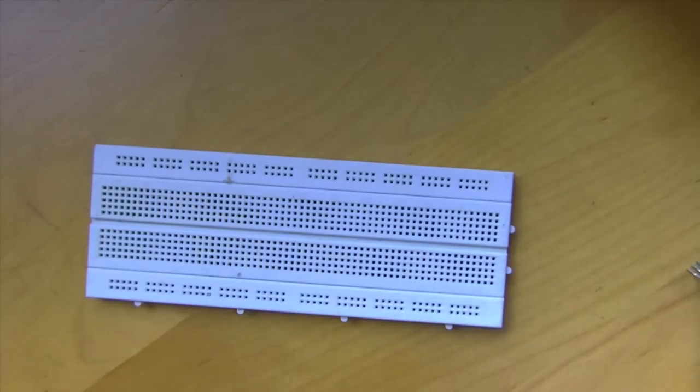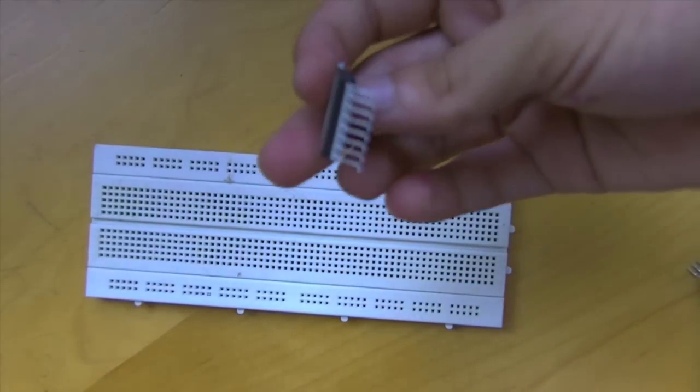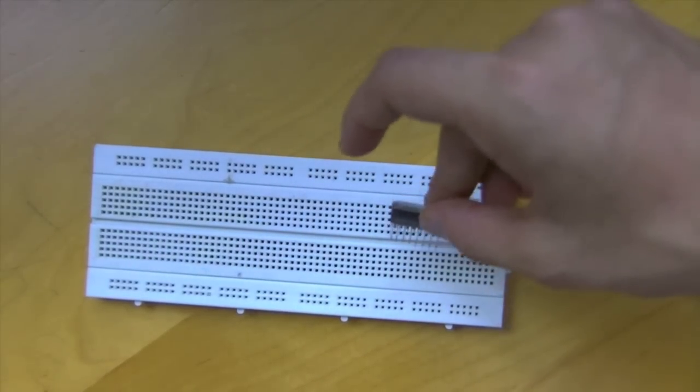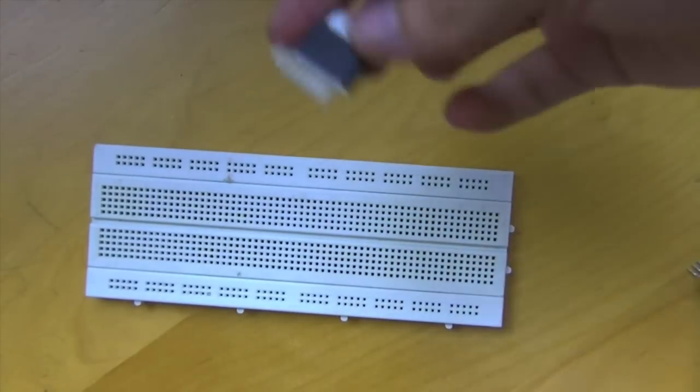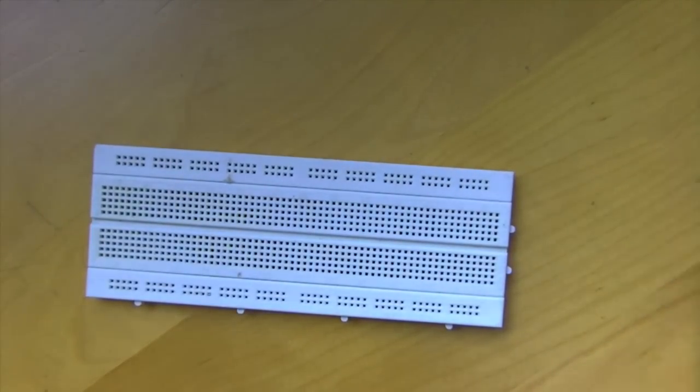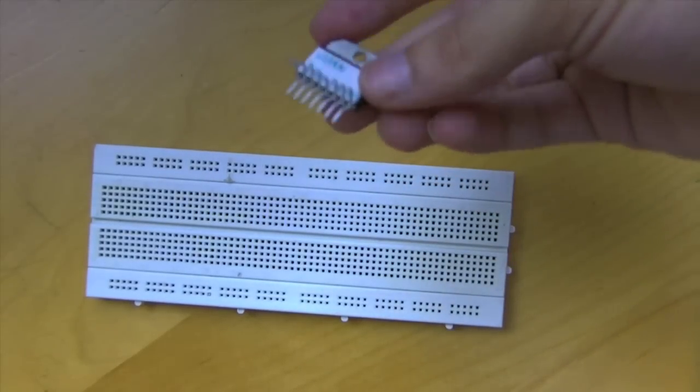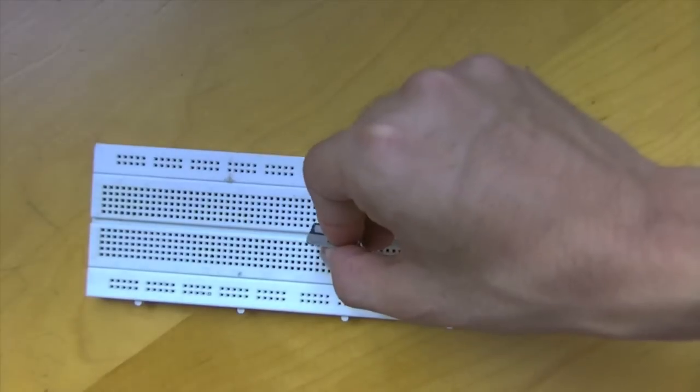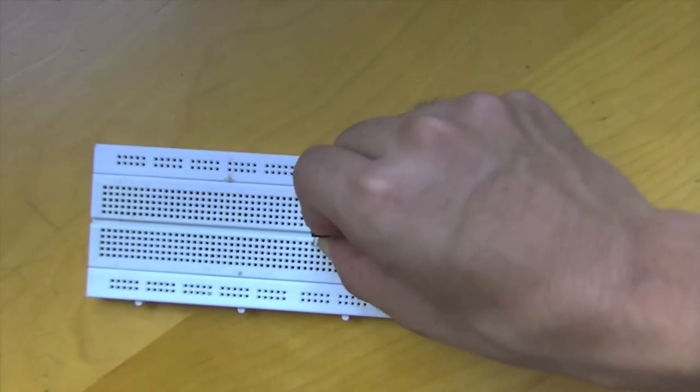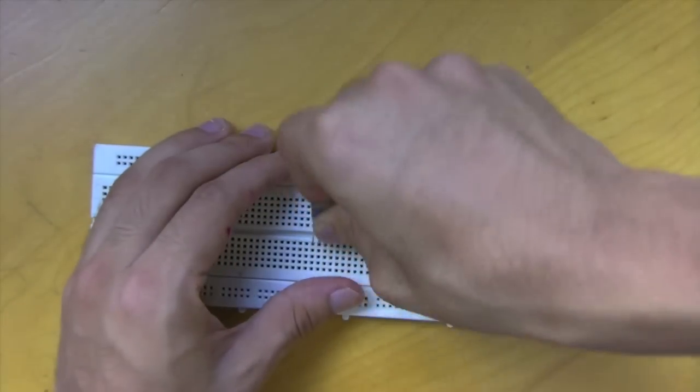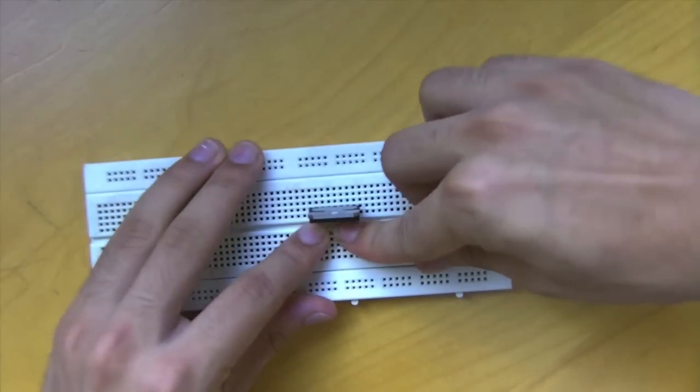When you take your L298 out, you'll notice that the pins don't fit directly into the breadboard. You're going to have to bend them slightly so they will fit. I've already done this on another one. The long leads are actually quite flexible, so it's not too hard. We'll just plug that in.